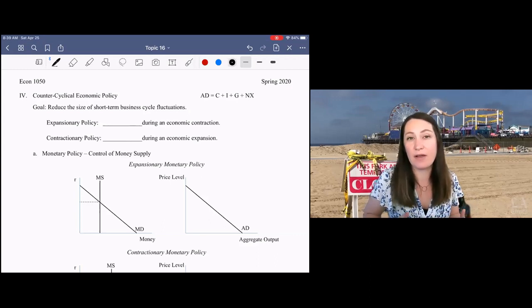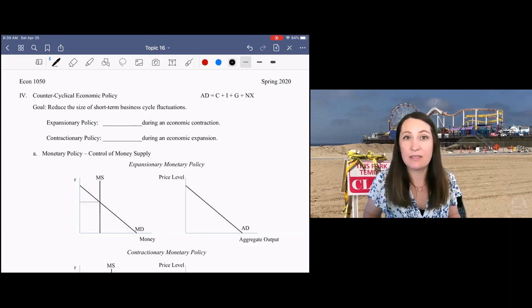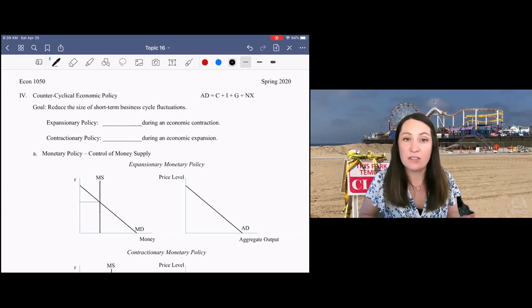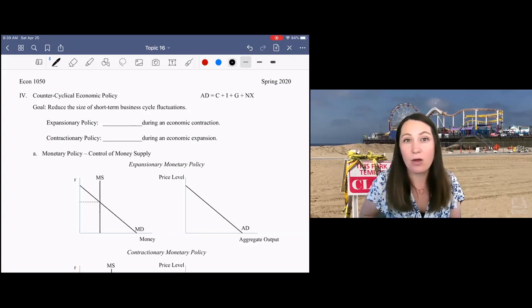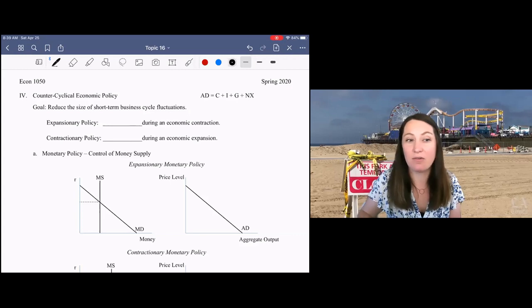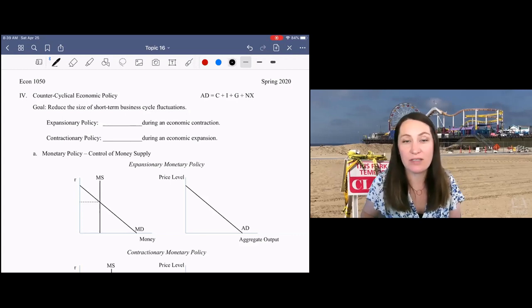We're going to talk about two different sets of policy options that are available to address business cycle fluctuations. We'll talk about fiscal policy, the government budget - that's taxation and spending - and then we'll also talk about monetary policy, which we've already talked quite a lot about in terms of how the Fed controls money supply. We're going to start with monetary policy because you already have a pretty solid background with it.